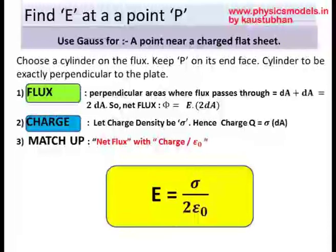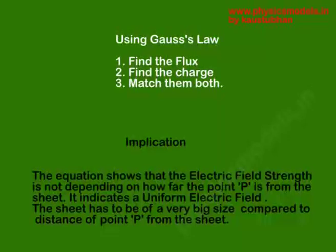So we use Gauss's law for a sheet, we found the flux, we found the charge, and we matched them both. And as you can see on the notes below, for a particular sheet, for a uniform electric field, the distance of the point P from the sheet is not entering into the equation.